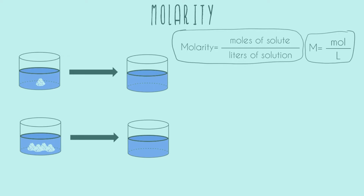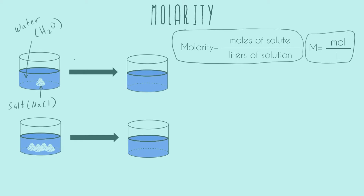Before we do a practice problem, let's look at the left and really break down why we would care about this concept and what we're going to use it for. Over here in our first jar of water on the left-hand side, we have salt and we have water. This is something we're all familiar with. We've all seen salt go into water, and we know that if we stir, it's going to dissolve. Nothing more complicated than salty water. Because we're in chemistry class, we're going to learn some vocabulary words. What gets dissolved is called the solute — in this case, that would be the salt.